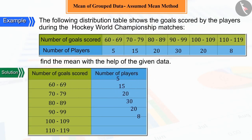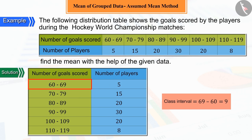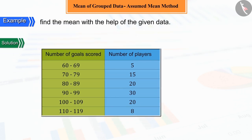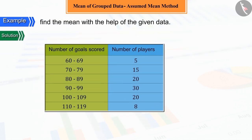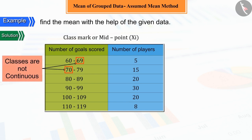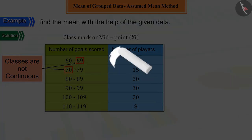The given distribution table is a system of grouped data, where the size of the class interval is 9. We know that for mean, we need the class mark of these class intervals or midpoints. But here, the class is not continuous. Can you tell what we have to do to make the class continuous?